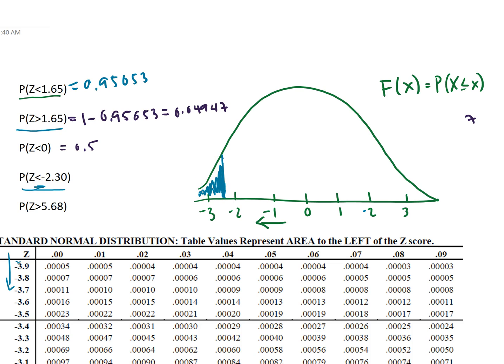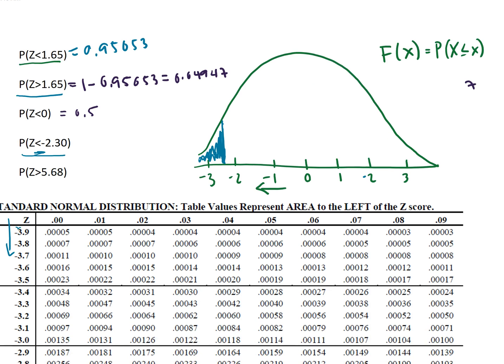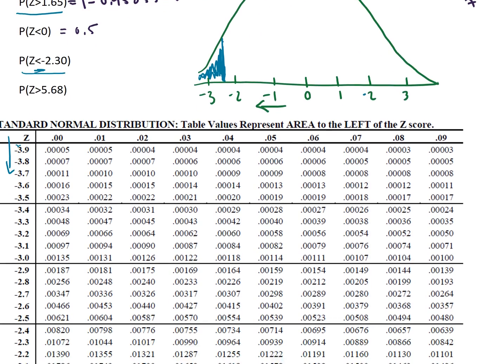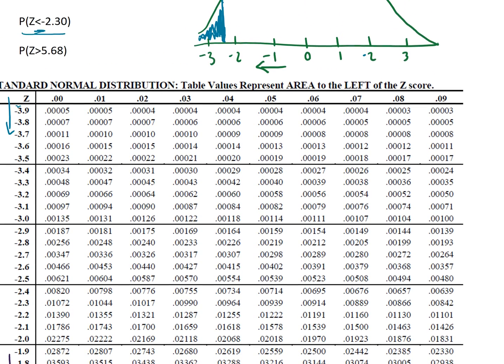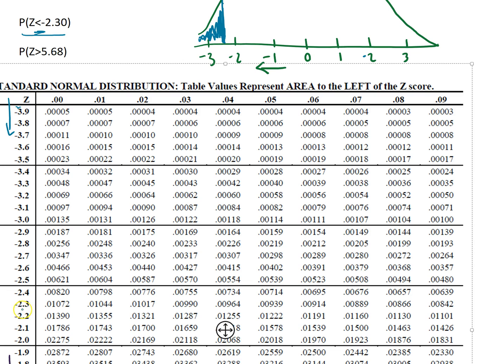It doesn't look like it'll be much. So let's go ahead and find the value on our table. So again go down, scroll down with the z's until you get to negative 2.3. Well the hundreds place in this case is just 0. So we have negative 2.3 and we match it up with the hundreds place which is 0 which is equal to 0.01072.